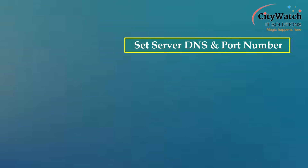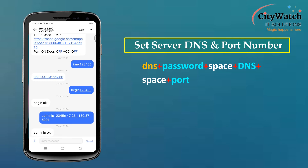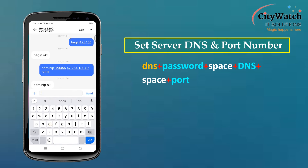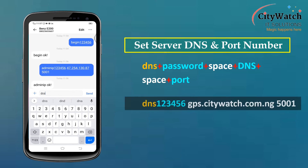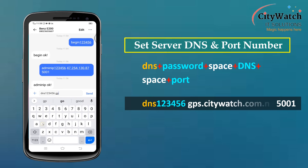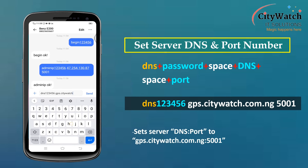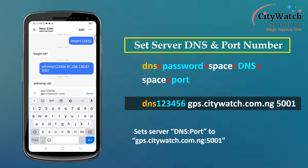Alternatively, you can set the server DNS instead of the server IP address. For instance, the command dns123456 gps.citywatch.com.ng 5001 is another way of configuring the device to push updates to CityWatch server. DNS addresses are human-readable and easier to remember than server IP addresses.